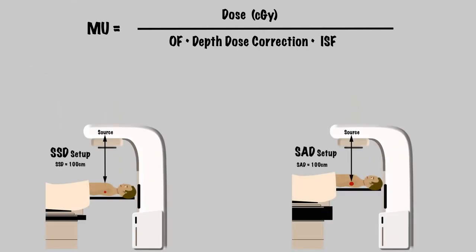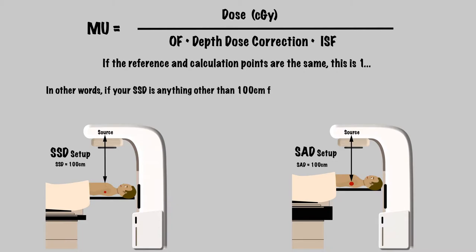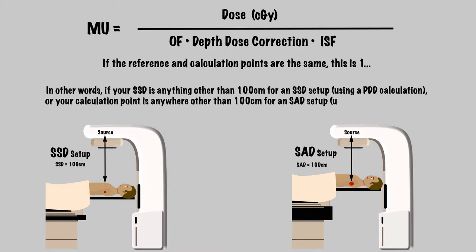The nuance thing here is the inverse square factor in the denominator. You need inverse square if the calculation point is not the same distance from the source as the reference point. In other words, if your SSD is anything other than 100 centimeters for an SSD setup, using a PDD calculation, or a calculation point is anywhere other than 100 centimeters for an SAD setup, using a TMR calculation.